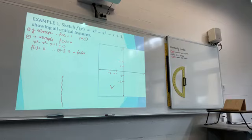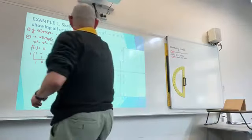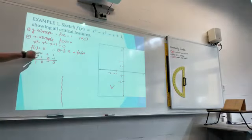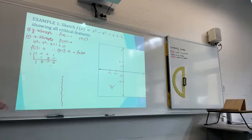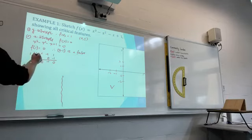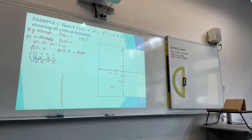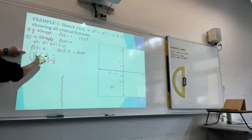If you cannot remember how to do synthetic division, have a look at the whiteboard. What you do is write the coefficient of all the terms from your function. You've got 1x³ minus 1x² minus 1x plus 1. Since (x − 1) is a factor, you write 1 there. Bring the 1 down, multiply, and you've got that.